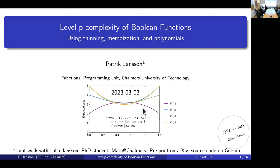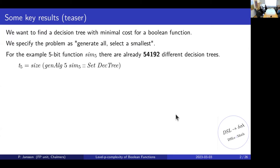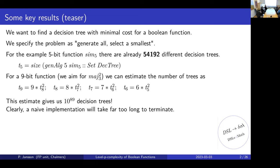We have a boolean function that can be evaluated in different orders, looking at one bit at a time. The way of looking at the function is called the decision tree, and we want to compute a decision tree with minimal cost. One way is to generate all the decision trees and select the smallest. For this five-bit function, there are 54,000 different decision trees.